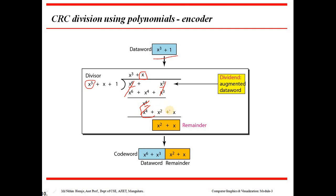We get x power 2 plus x as the remainder. We have the data word as x power 3 plus 1, which was multiplied to get x power 6 plus x power 3 as the dividend. We append that with the remainder x power 2 plus x. So this becomes the code word. That is using polynomial — this is the sender's end, that is the encoder part.